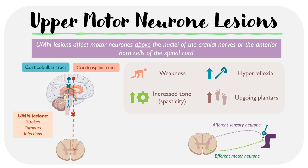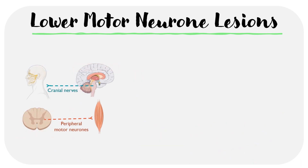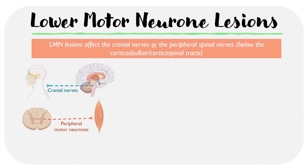Importantly, in this arc we actually do have some upper motor neuron input as well, and this input basically helps to inhibit the reflex. Therefore, when there's an upper motor neuron lesion, this inhibitory effect is also prevented, which results in exacerbation of reflexes — explaining the hyperreflexia. Turning towards lower motor neuron lesions, these can affect the cranial nerves or the peripheral spinal nerves, which both lie below the corticobulbar and corticospinal tracts respectively.